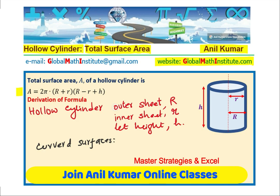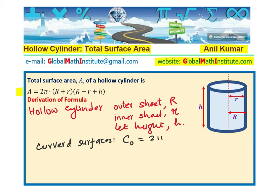So curved surface outer, CO, will be 2πR times h, the circumference. And then we have curved surface inner, which will be 2πr times h. When we see total surface area, in that case, inner and outer surfaces will contribute towards the surface area, they are exposed.